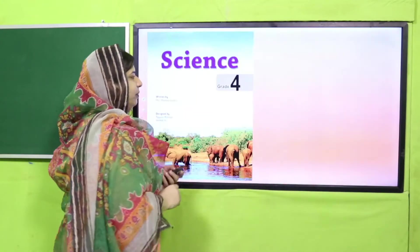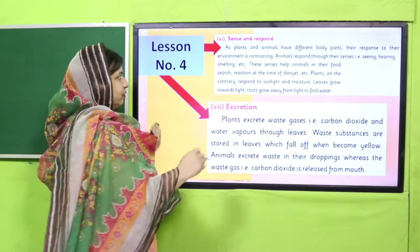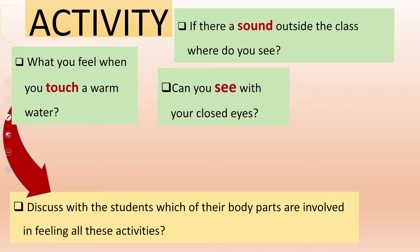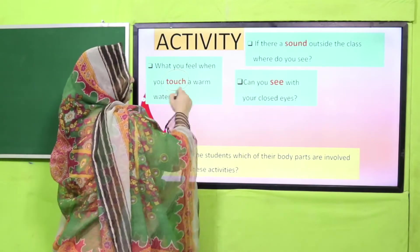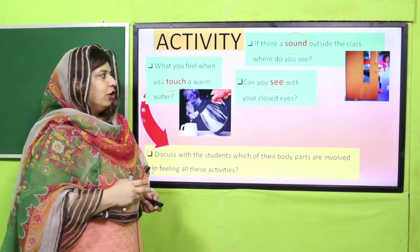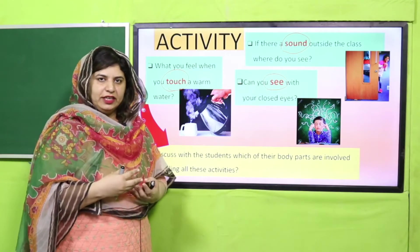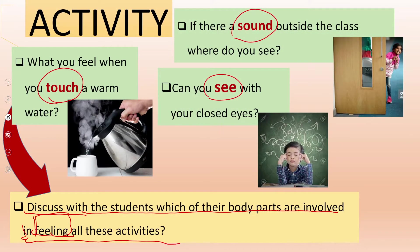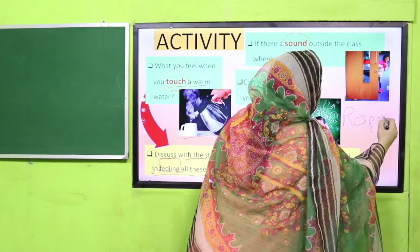Aur aaj aapki Book 4, Chapter 1 mein humne padhna hai ke how do plants and animals sense and respond, and we will also compare how do they excrete. Teachers, aap apne students ko sense of touch, sense of sound, and sense of hearing ki activity class mein conduct karayen, aur unse different responses leke unse discuss karen ke kaun sa body part involved hai in feeling these activities. Then get their responses so they will tell you what they felt.